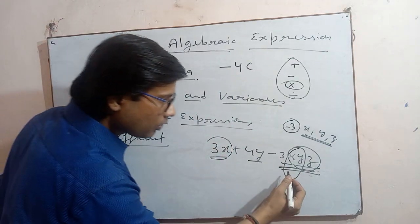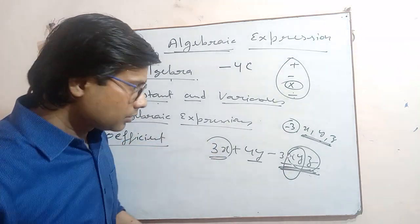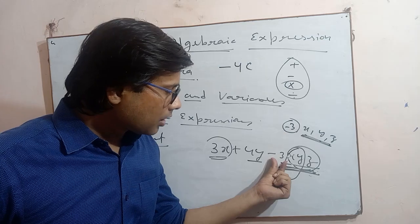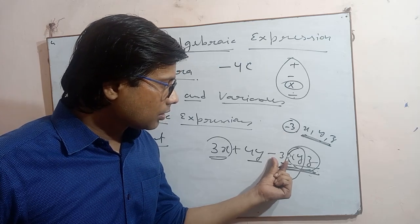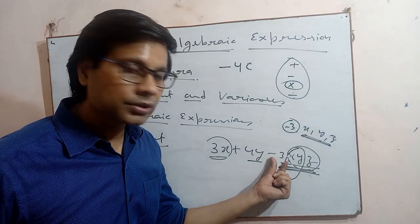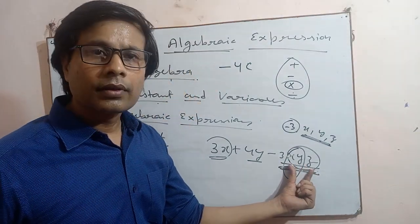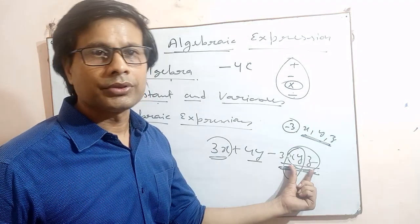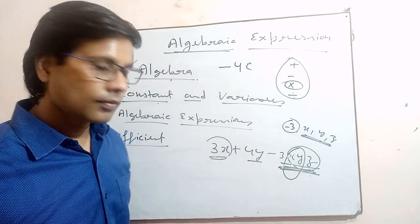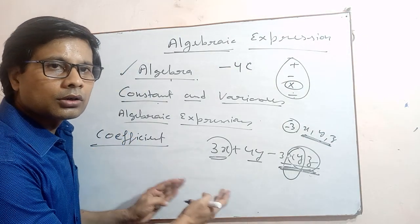Now, if you want to go into the forms of coefficient: in a term like minus 3xyz, the constant part — minus 3 — is called the numeric coefficient. And the letters which are left — xyz — are called the literal coefficient. So we have the meaning of coefficient, literal coefficient, and numeric coefficient.